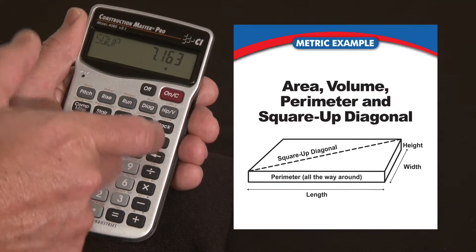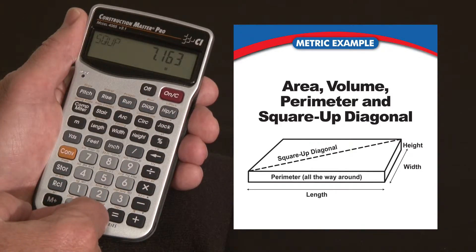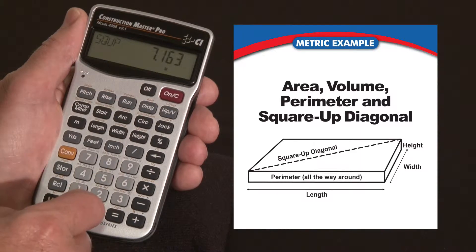Press it again. That gives me the square-up diagonals. So if I'm setting forms and I'm going to pull a tape and make sure I've got true 90-degree corners, that's the value I need to see.